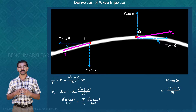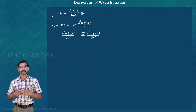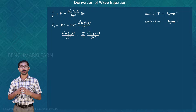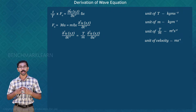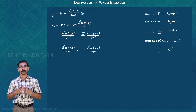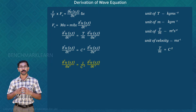Combining both expressions and cancelling Δx, we get m · ∂²u(x,t)/∂t² = T · ∂²u(x,t)/∂x², or ∂²u(x,t)/∂t² = (T/m) · ∂²u(x,t)/∂x². The constant term T/m has units of (kg·m/s²)/(kg/m) = m²/s², which is the dimension of the square of velocity. So we equate T/m = C², where C is the wave velocity. Substituting, we obtain ∂²u(x,t)/∂t² = C² · ∂²u(x,t)/∂x².